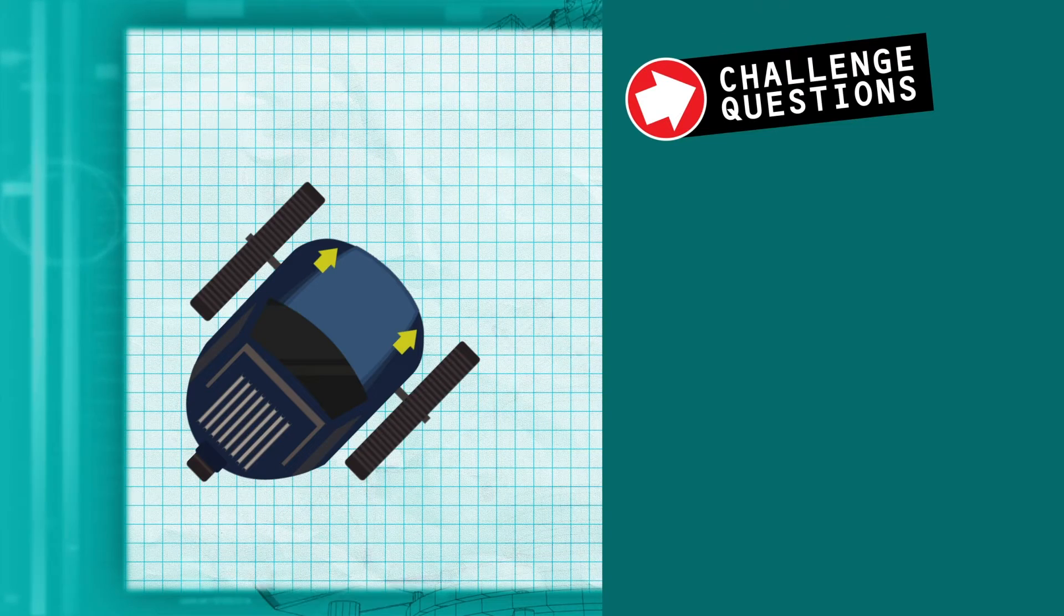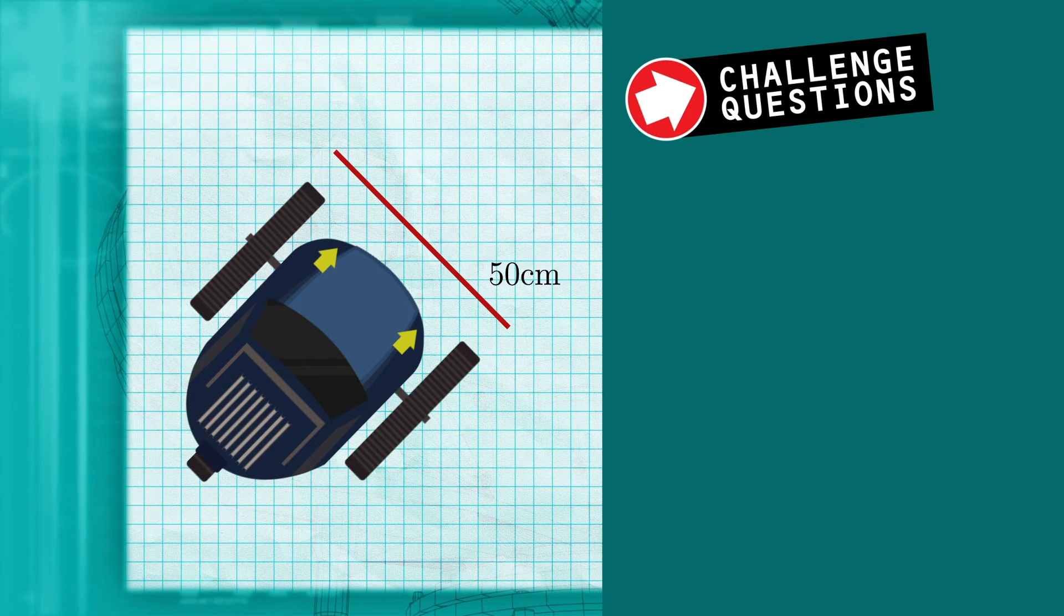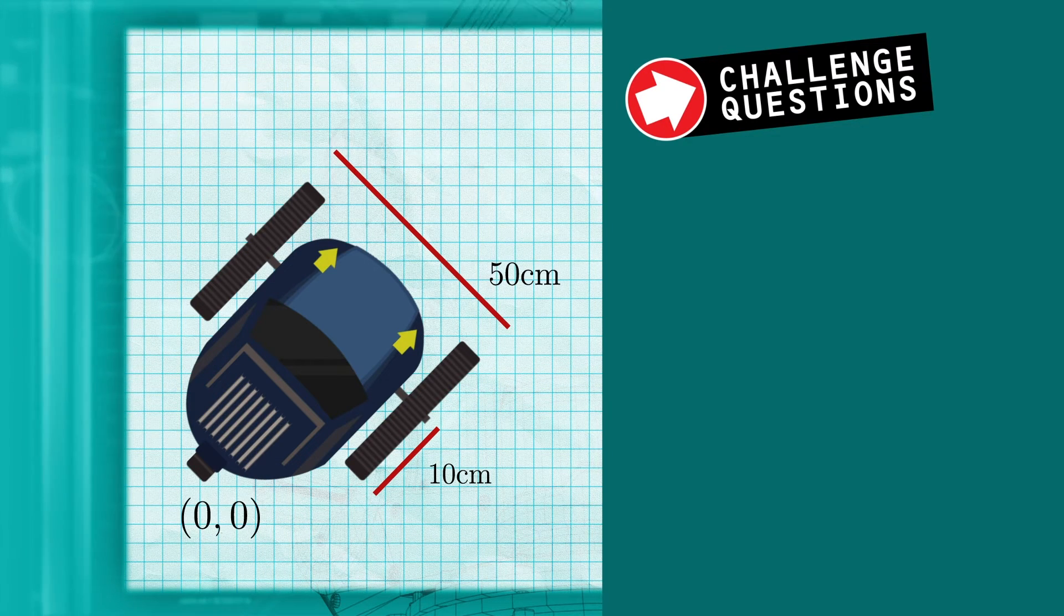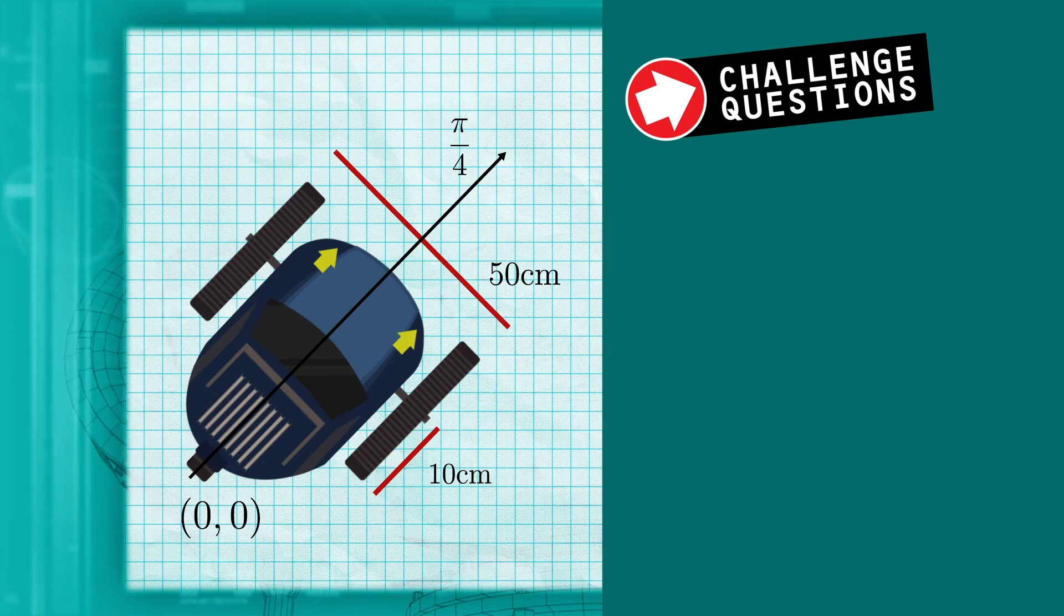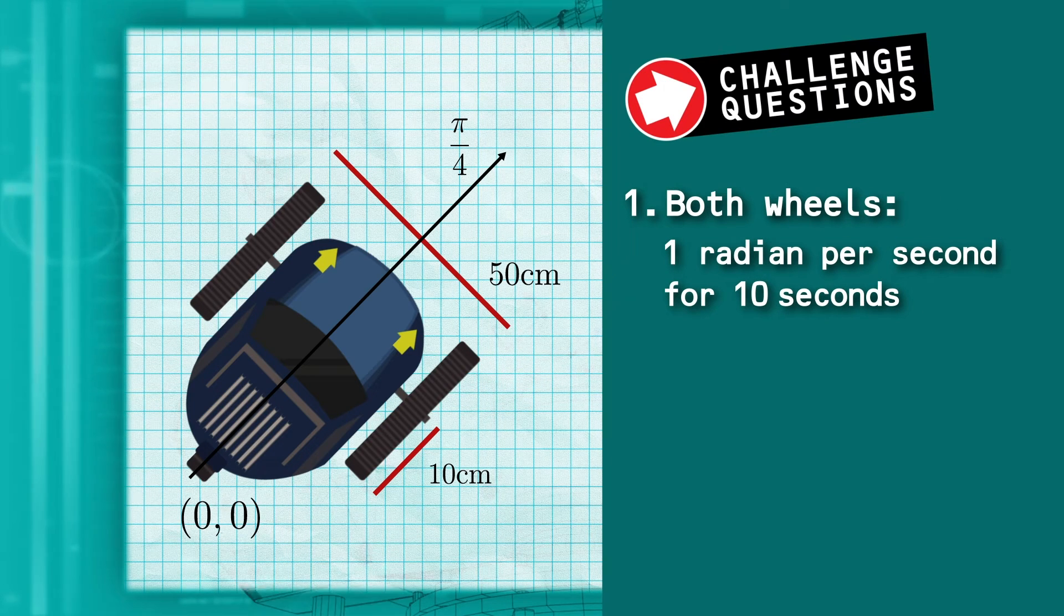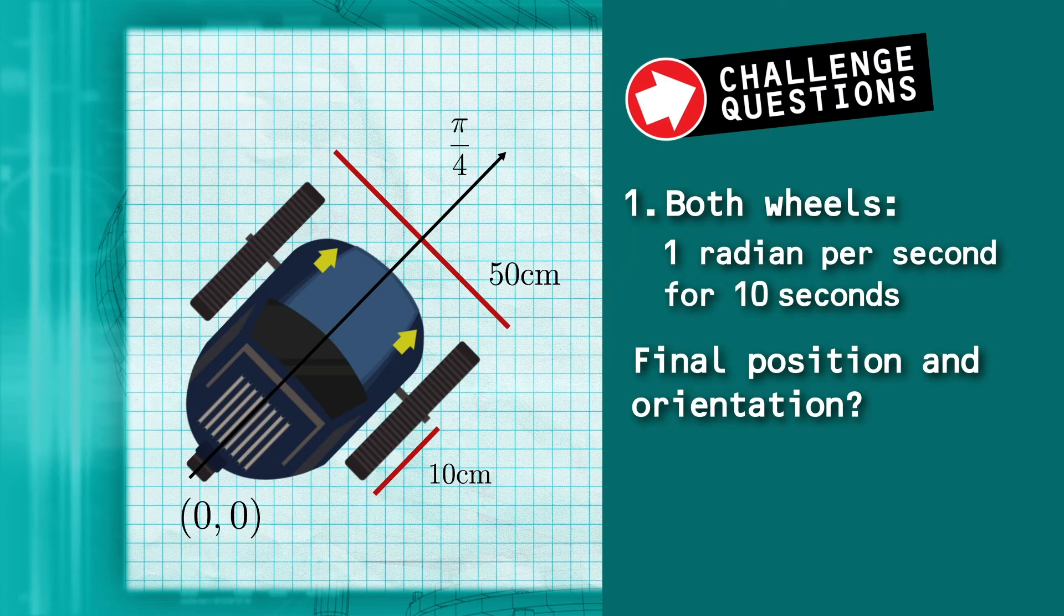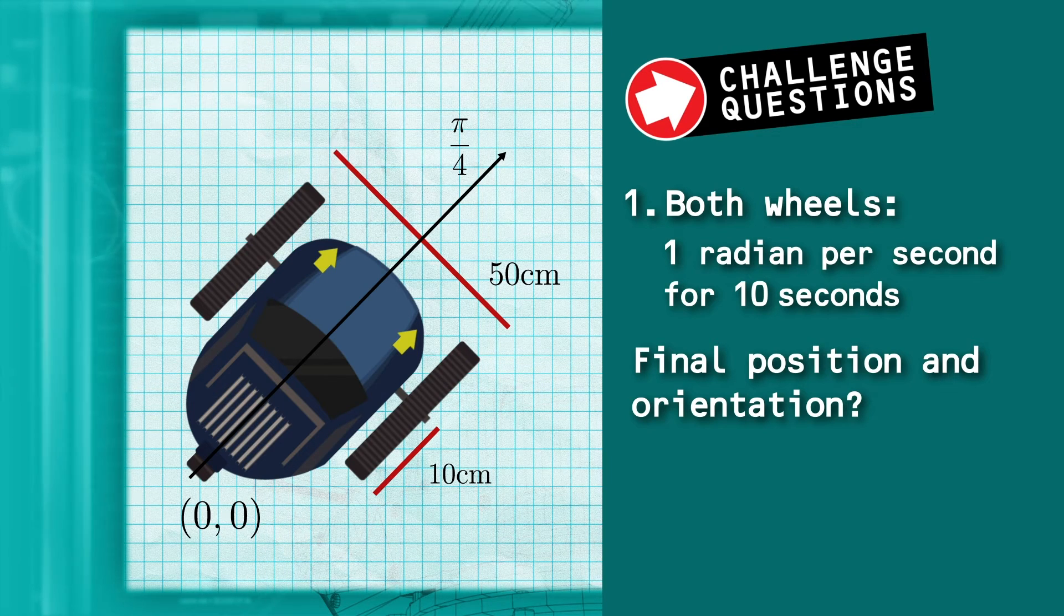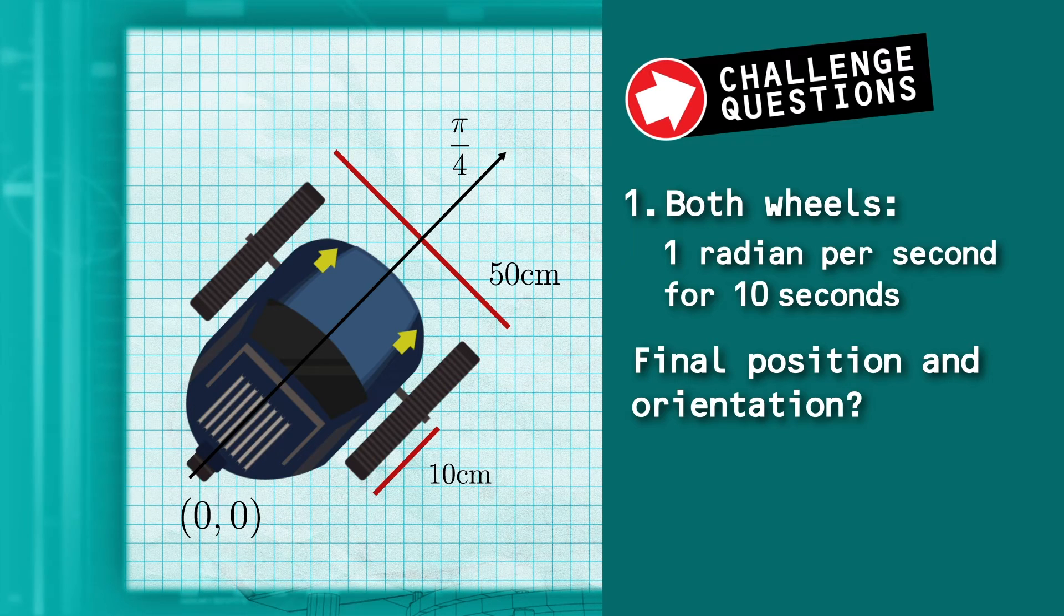Get your pencils ready for this week's challenge questions. This week's challenge questions are: imagine you have a robot that is 50 centimeters wide with 10 centimeter radius wheels. The robot starts out at (0, 0) with an initial orientation of π/4. If the robot drives both wheels at a constant speed of 1 radian per second for 10 seconds, what is the robot's final position and orientation?